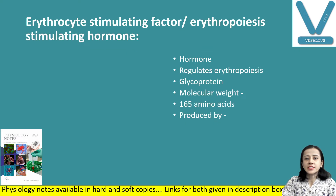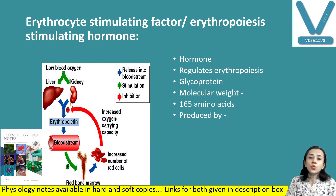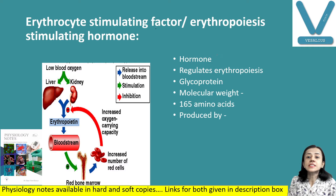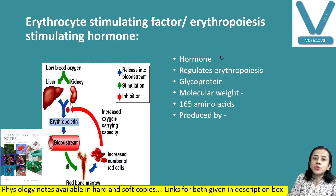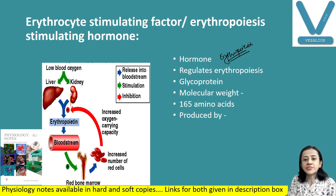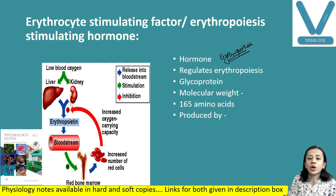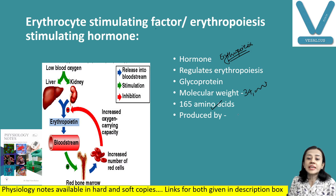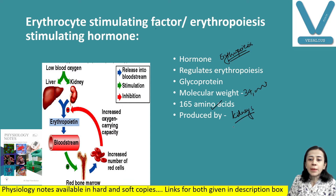Starting with the first general factor: erythropoietin, also known as erythrocyte stimulating factor or erythropoiesis stimulating factor. It is a hormone which regulates the process of erythropoiesis. Its structure is a glycoprotein with a molecular weight of about 34,000 and 165 amino acids.